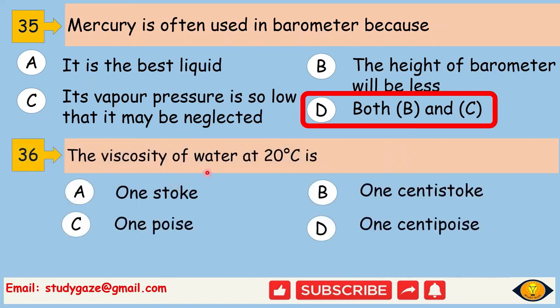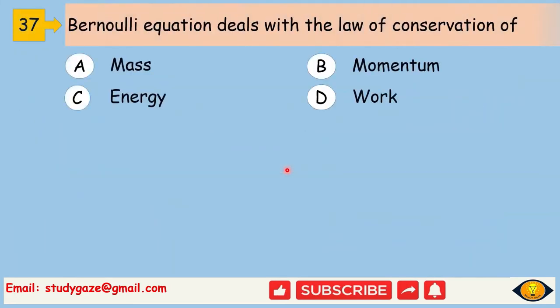The viscosity of water at 20 degrees Celsius is 1 centipoise. Bernoulli equation deals with the law of conservation of energy.